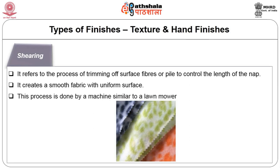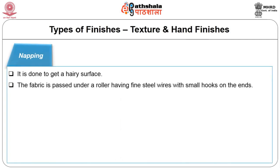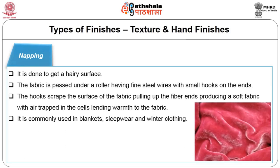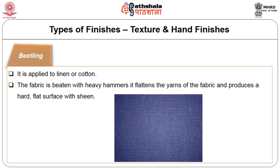This shearing process is done by a machine similar to a lawn mower. Napping is done to get a hairy surface — the fabric is passed under a roller having fine steel wires with small hooks on the ends. The hooks scrape the surface of the fabric, pulling up the fiber ends and producing a soft fabric with air trapped in the cells, lending warmth. It is commonly used in blankets, sleepwear and winter clothing.